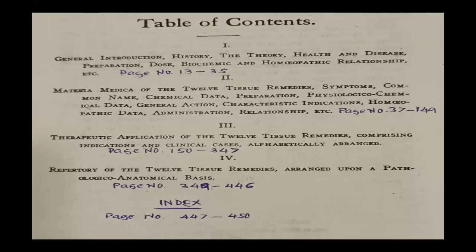If you have any condition in mind — say a patient is suffering from piles — open that in the therapeutic part, read those two or three pages and you will understand the depth of the remedies, how to use them, how they have been applied with examples. The last part comprises the repertory, arranged upon a pathological-anatomical basis, from page 349 onwards to 446. There is also an index at the end from page 447 to 450, not mentioned in the table of contents, which helps you locate entries quickly.